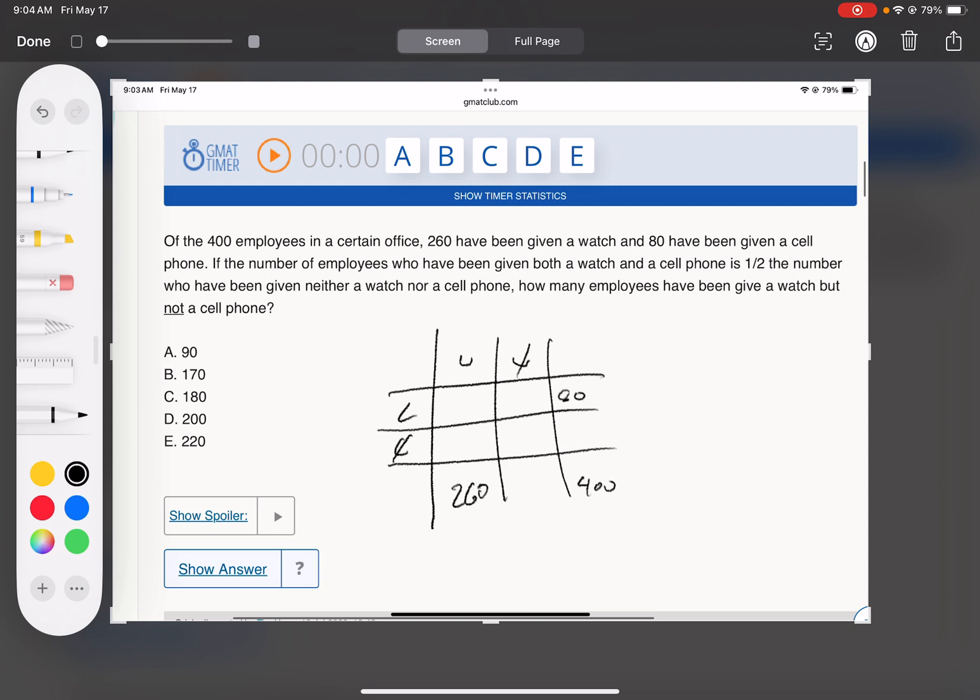80 have a cell phone. Okay, so this is 140, 320. The number who have been given both a watch and a cell phone is half the number who have been given neither. So neither is x, watch and cell phone is one half x. Right. How many employees have been given a watch but not a cell phone?